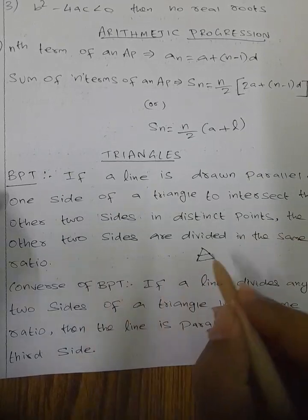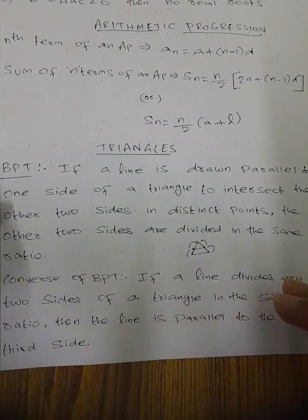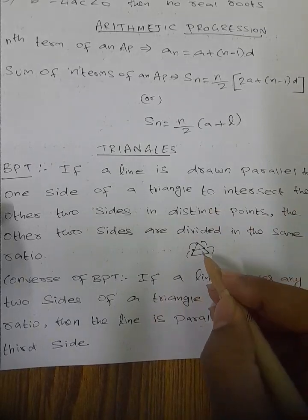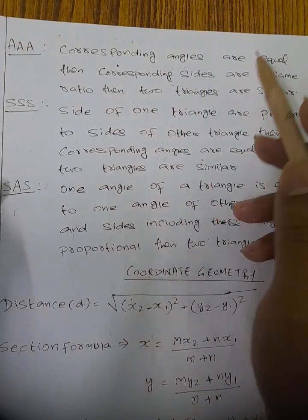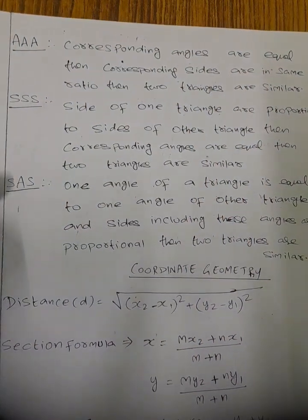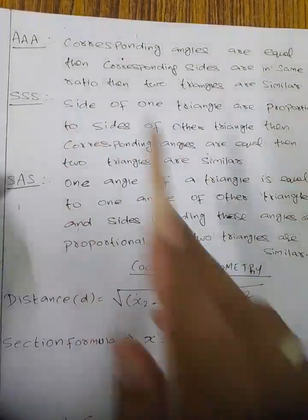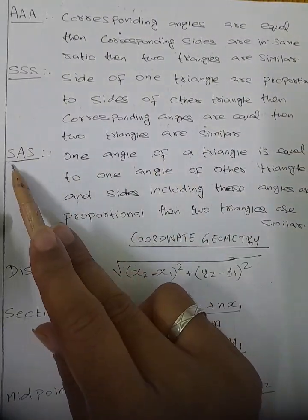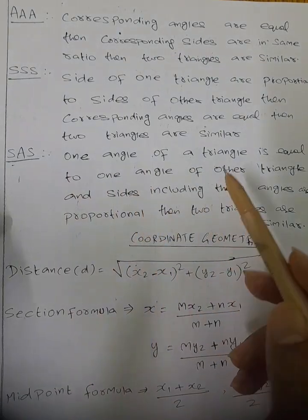Next, triangles. The basic proportionality theorem states: if a line is drawn parallel to one side of a triangle to intersect the other two sides in distinct points, the other two sides are divided in the same ratio. For similar triangles, the AAA criterion states corresponding angles are equal and corresponding sides are in the same ratio. SSS similarity: sides of one triangle are proportional to corresponding sides of another. SAS similarity: two sides are proportional and the included corresponding angle is equal, making the two triangles similar.